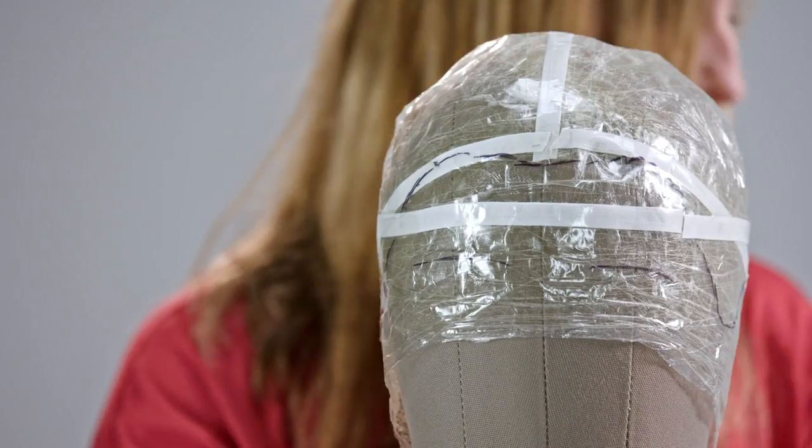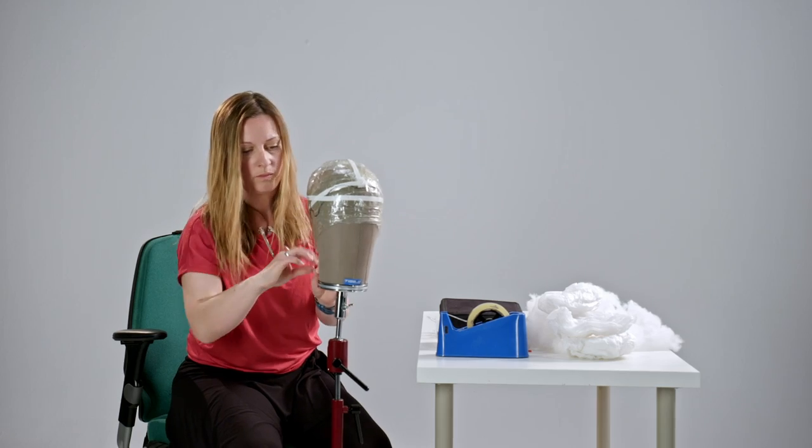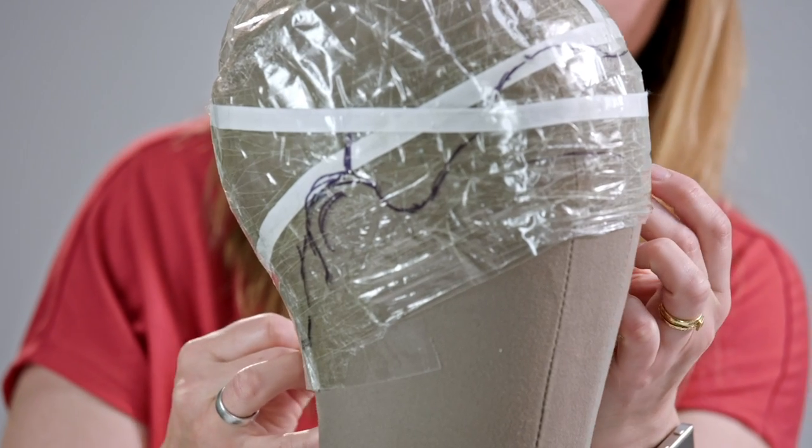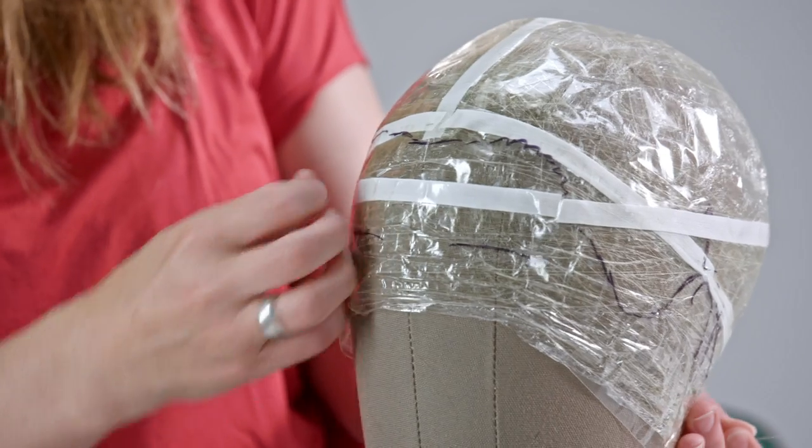A block is like a dummy head for making and dressing wigs on. The head wrap is transferred onto the malleable block and padded.